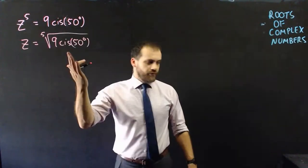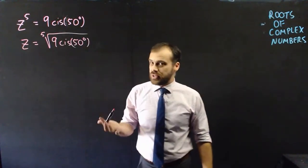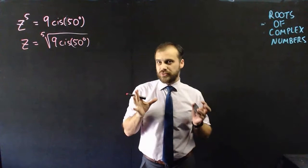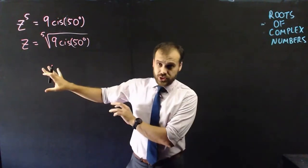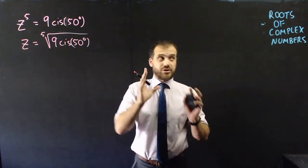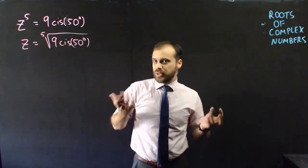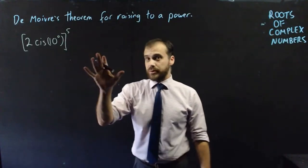Your first instinct might be something like finding the fifth root of 9 cis 50 degrees, and you might not know where to go from here. We're going to put this question aside for a second, because we really need to dissect what these roots of a complex number are. Before we get to roots, we need to revisit powers.